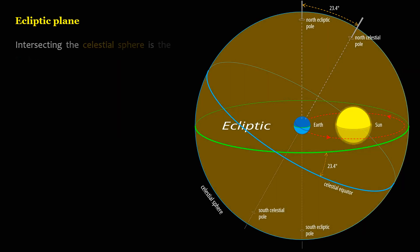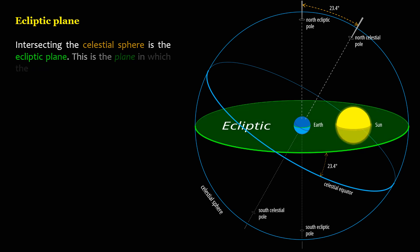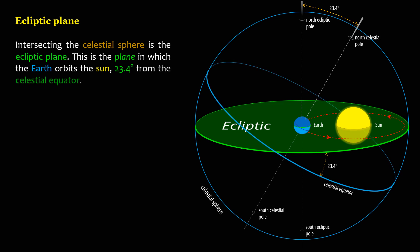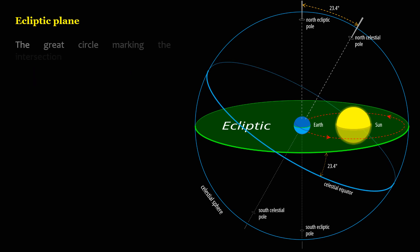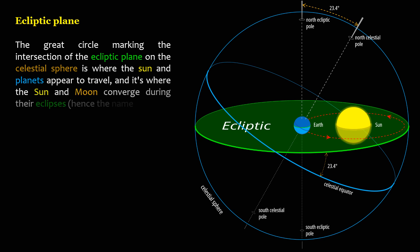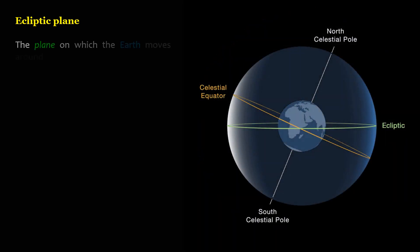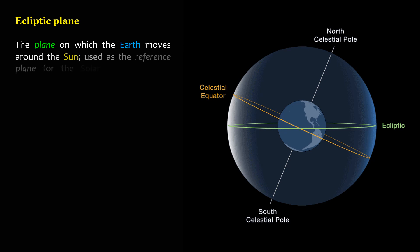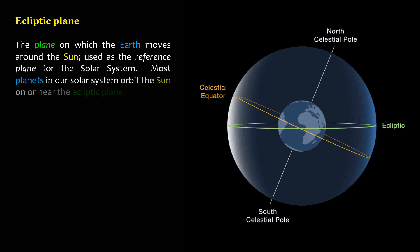Intersecting the celestial sphere is the ecliptic plane. This is the plane in which the Earth orbits the Sun, 23.4 degrees from the celestial equator. The great circle marking the intersection of the ecliptic plane on the celestial sphere is where the Sun and planets appear to travel, and it's where the Sun and Moon converge during their eclipses, hence the name. The plane on which the Earth moves around the Sun is used as the reference plane for the solar system. Most planets in our solar system orbit the Sun on or near the ecliptic plane; Earth orbits the Sun at zero degrees.